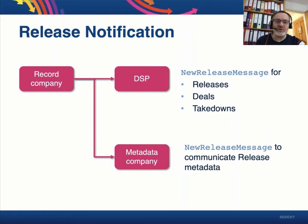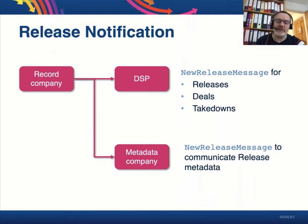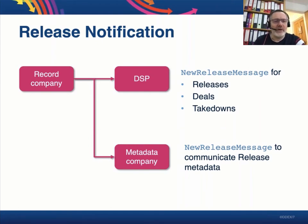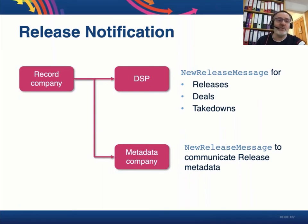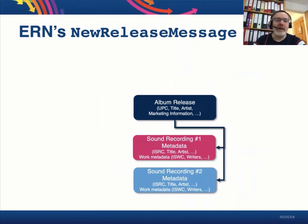The ERN message is also used to send information about releases, resources, musical works, and the parties involved to metadata companies — whether those are companies that collect and enrich metadata for other DSPs or companies that deal with fingerprinting and rights policing activities. It can also be used wherever a record company would like to equip a company with catalog information. In fact, the first ERN implementation was from a record company to a music rights society to enable the society to have access to the latest catalog information.